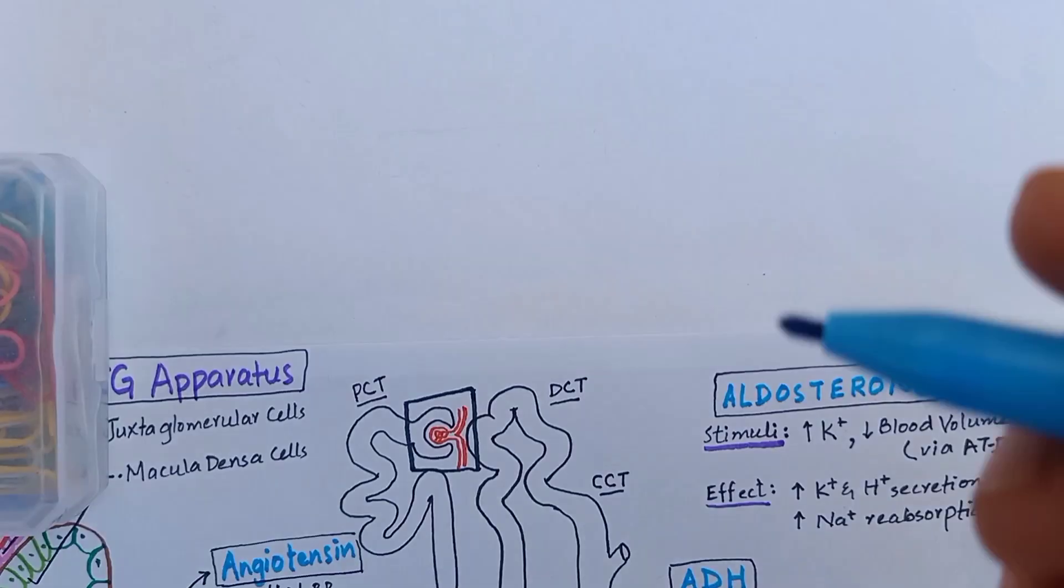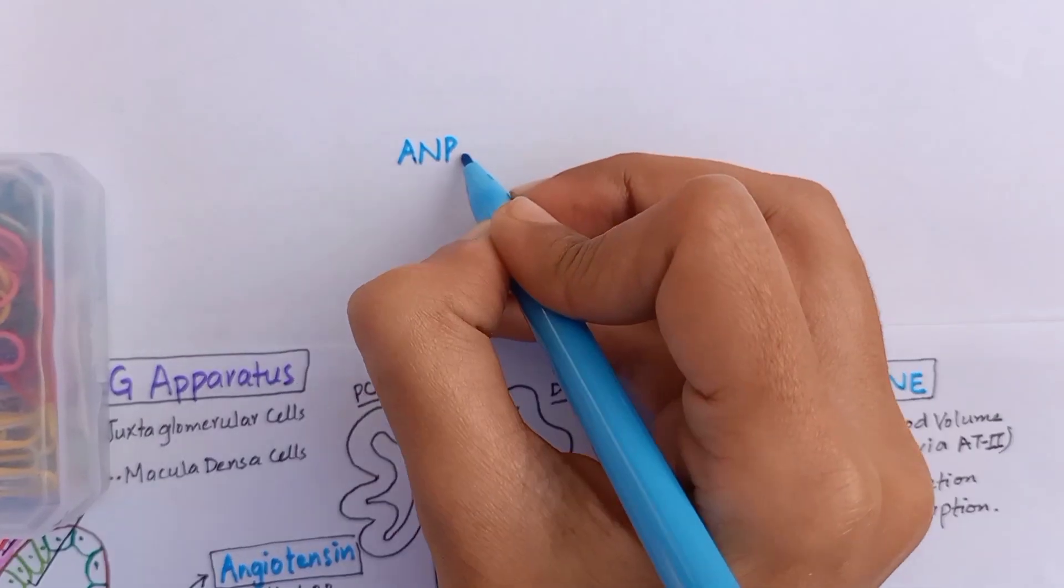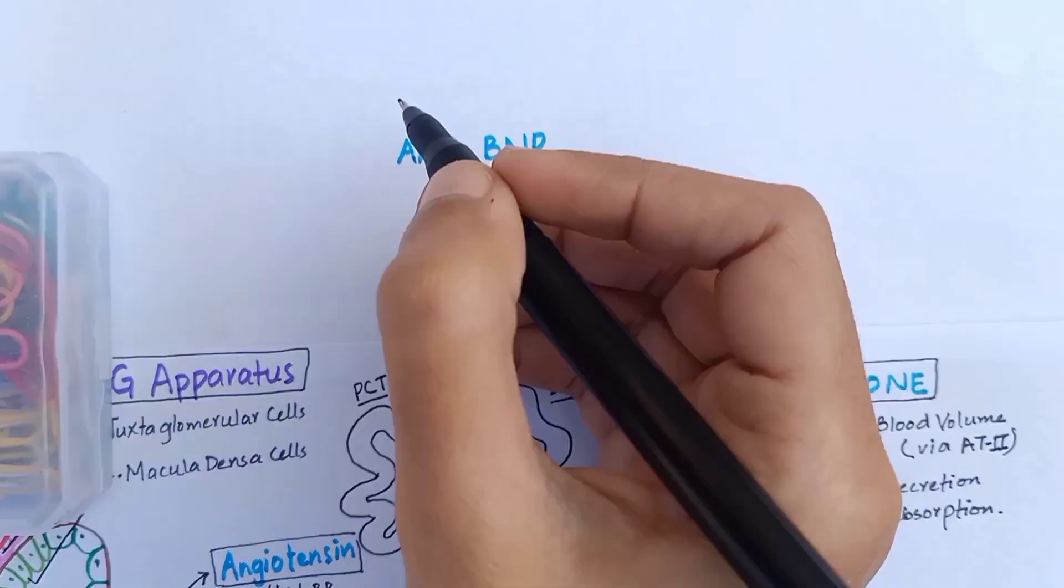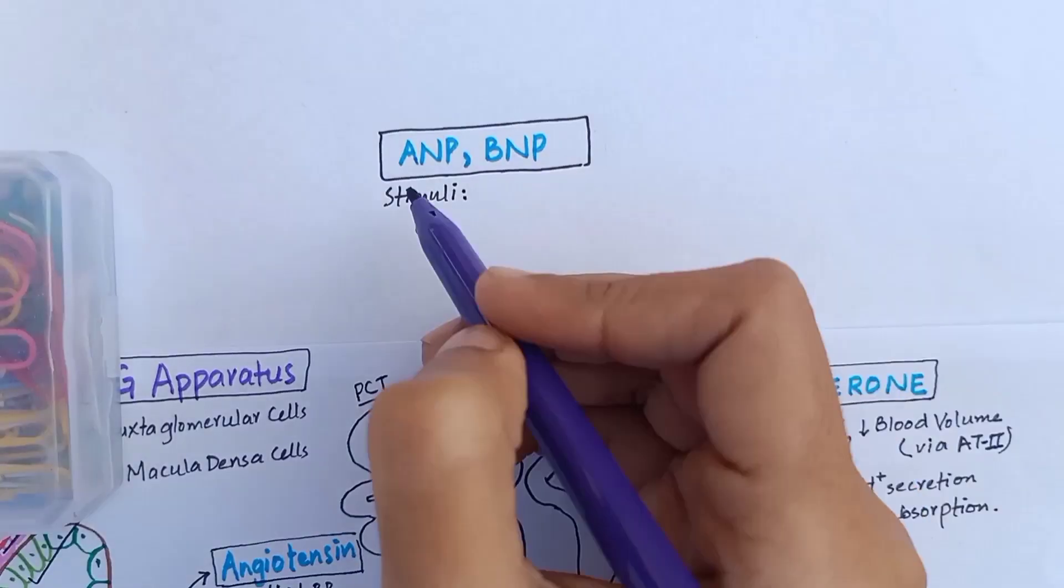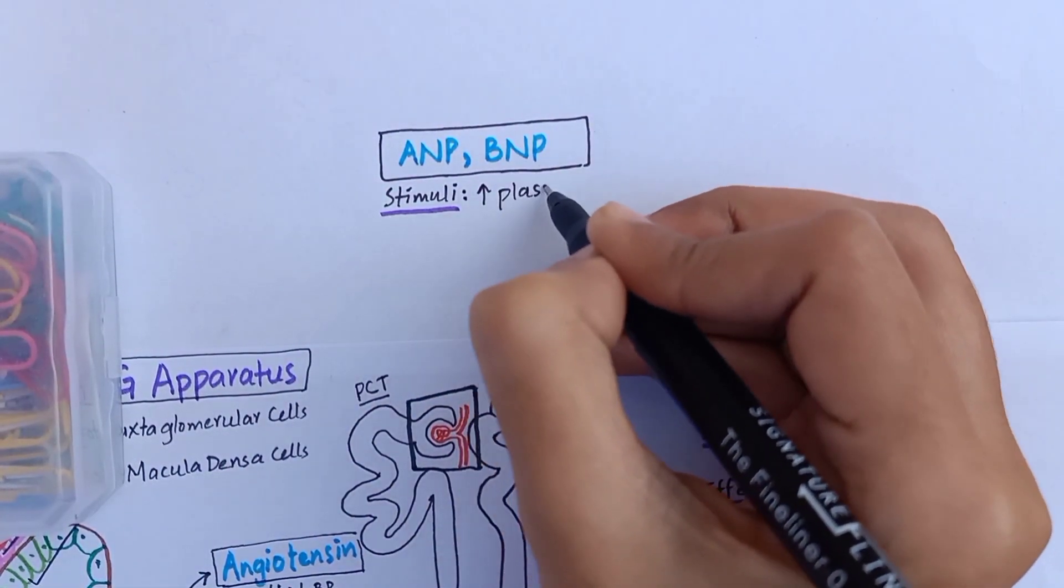The fourth hormone acting on kidney is a group of cardiac peptides known as atrial natriuretic peptide and brain natriuretic peptide. These two are secreted in response to high plasma volume.